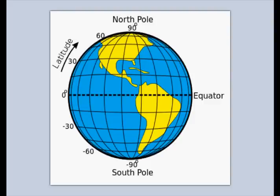If we talk about True North, we need to talk about the Earth. You can see in our diagram here that we have a North Pole at 90 degrees and a South Pole at 90 degrees. Between those two poles, or through those two poles, is the line of axis of rotation of the Earth. Now the North Pole, 90 degrees North, is True North.